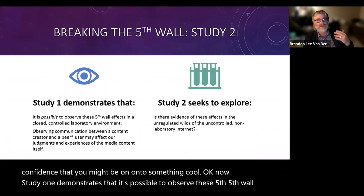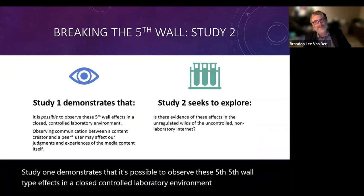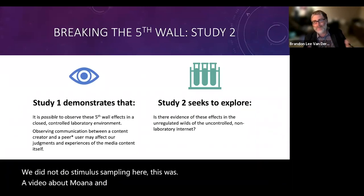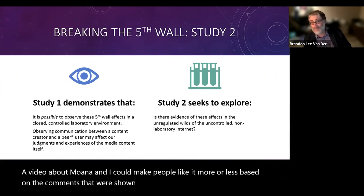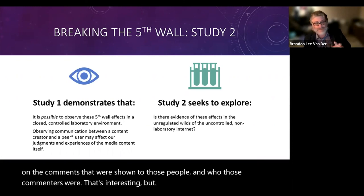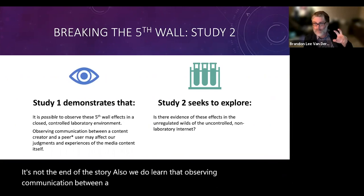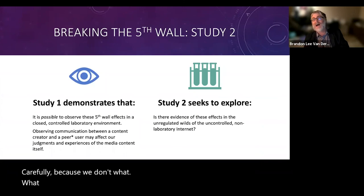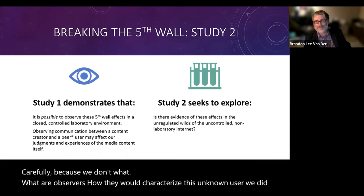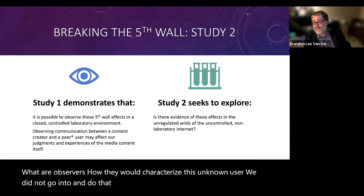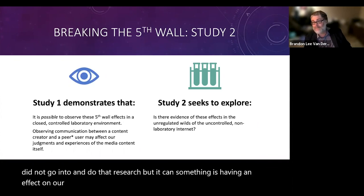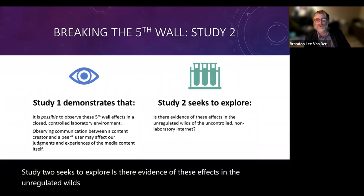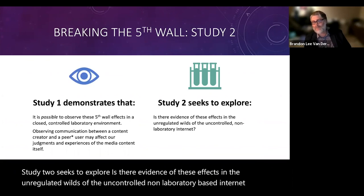Study 1 demonstrates it's possible to observe these fifth-wall-type effects in a controlled laboratory environment. We did not do stimulus sampling — this was a video about Moana, and we could make people like it more or less based on the comments shown to them and who those commenters were. We also learn that observing communication between a content creator and a peer user can have an effect on experiences of media content. Study 2 seeks to explore: is there evidence of these effects in the uncontrolled, unregulated wilds of the internet?